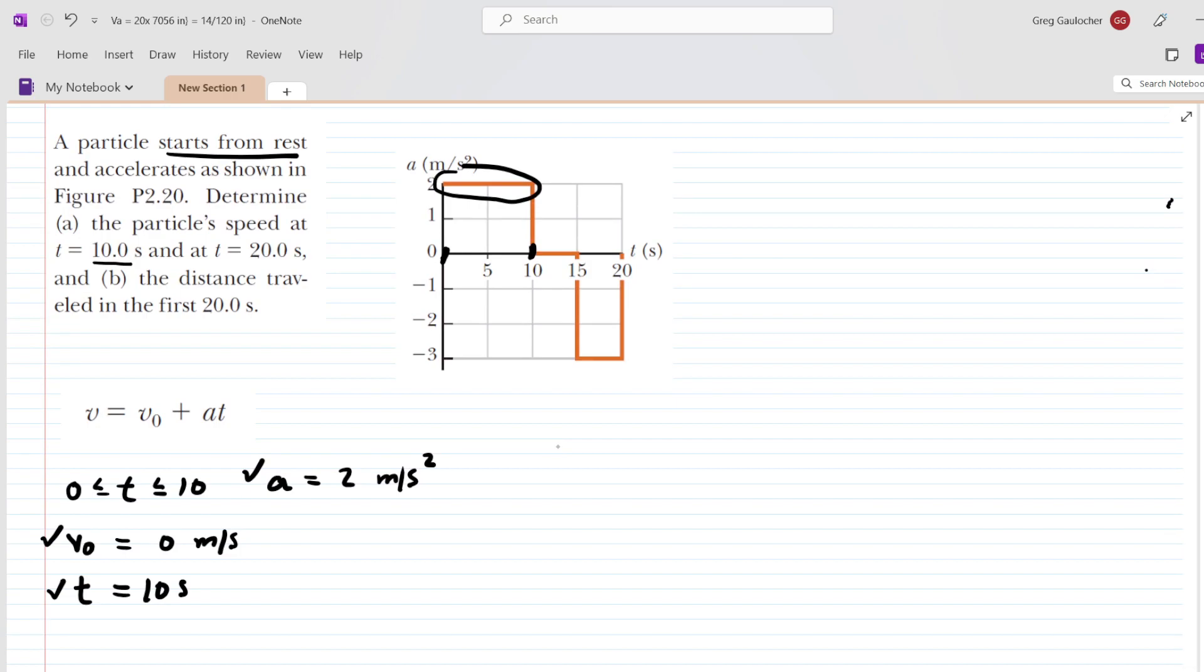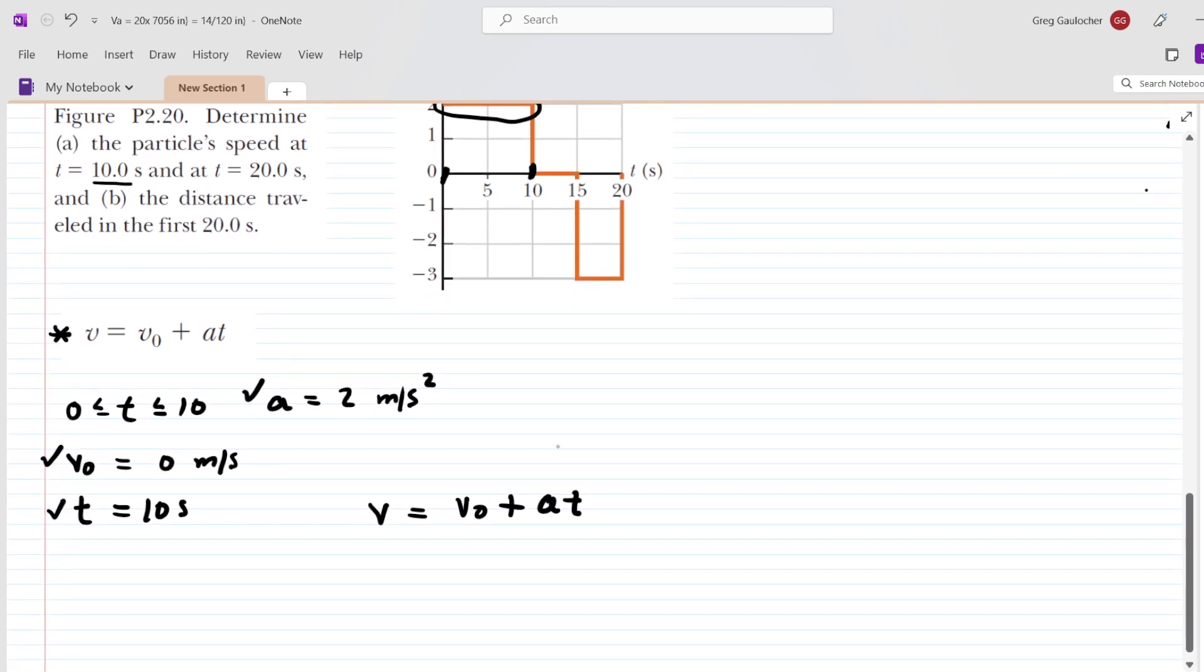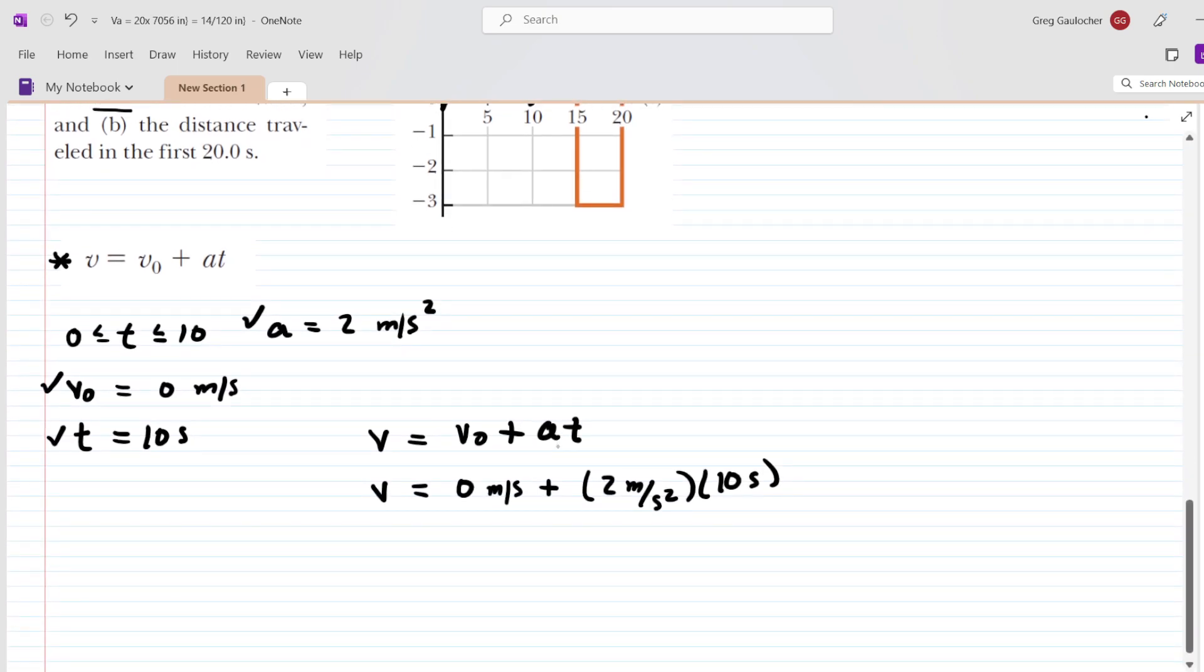That's the first thing we're going to do by using this equation right here. This equation tells us that the final velocity is equal to the initial velocity plus acceleration multiplied by time. Let's go ahead and plug in the stated quantities. Once we simplify the right-hand side of this equation, we're going to end up with 20.